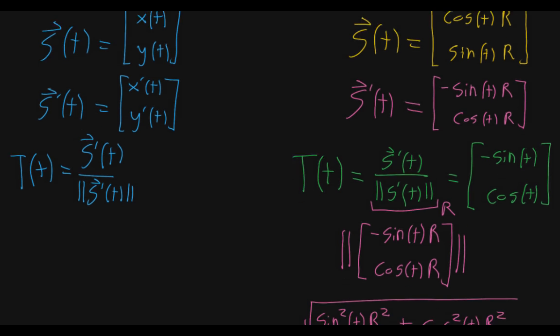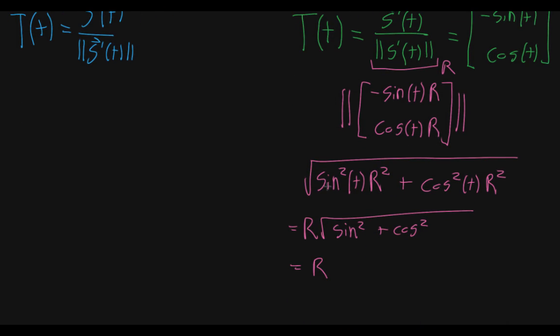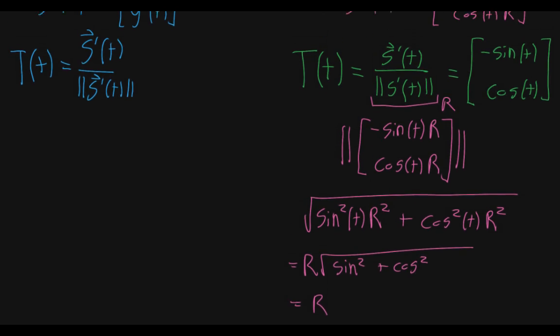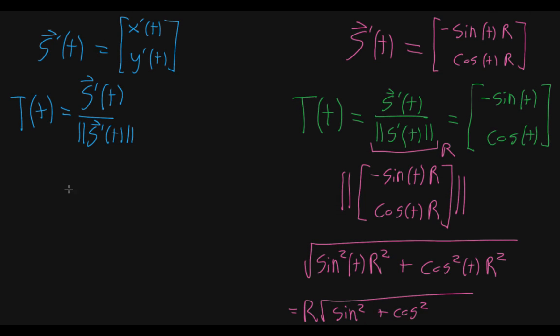In our specific case with the circle, once we took the x component squared, y component squared, and simplified it all out, we got the function R. But in the general case, we might not be so lucky because the magnitude of the derivative is the square root of x'(t) squared plus y'(t) squared.